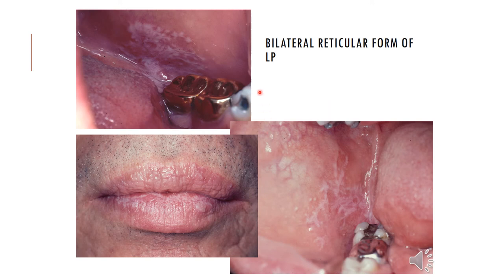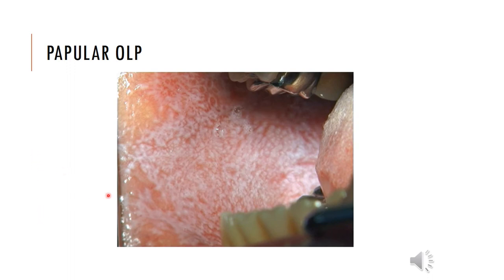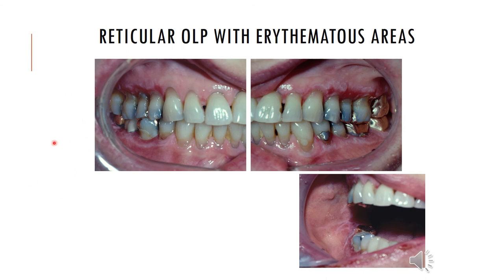Looking at clinical pictures: this patient has bilateral reticular lichen planus with Wickham's striae visible, and a lace-like white pattern on the lips. This next image shows the papular form with small white dots and some reticular network visible in the corner. The following case shows reticular white striae with erythematous areas together, illustrating what was mentioned earlier — the disease is progressing from white to red, meaning the patient was initially asymptomatic and is now becoming symptomatic. The transition from white to red can take months or even years.